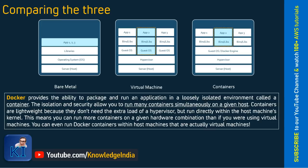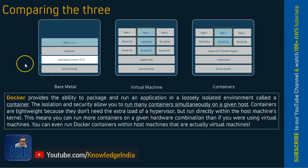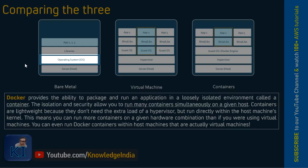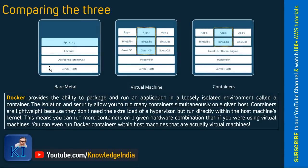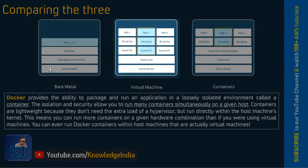The first model is the bare metal model, where you have a physical server or physical host, and on that, an operating system is installed. The complete physical resources of that particular host are available to that one operating system. As we move forward, we got into the virtual machine concept. On one physical host, a layer of hypervisor gets installed.